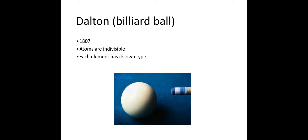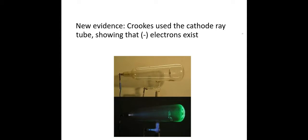We went with this idea for a little while, but eventually through experimentation we found that there are some things that exist that are actually a part of atoms, but not atoms themselves — they're smaller than atoms. Crookes was the one who did this using a cathode ray tube, essentially passing a current through a tube that has had most of the gases sucked out of it. He was able to see tiny little particles in there with a negative charge. These eventually got the name of electrons, and so atoms weren't the smallest thing around anymore.